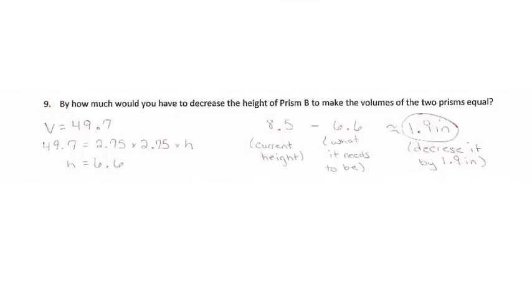Okay, so for number nine, by how much would you have to decrease the height of prism B to make the volumes of the two prisms equal? So the volume of prism A is 49.7. So if you take the height, the length and the width of prism B, 2.75 times 2.75 times what will give you a volume of 49.7. The height is 6.6. So the current height of prism B is 8.5. So you would have to subtract 8.5 minus 6.6, and that's what the height needs to be in order to have the same volume as prism A. And so you would have to decrease it by about 1.9 inches.